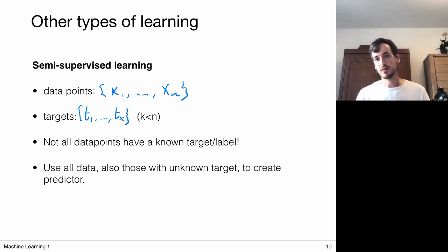And the goal is to really exploit all available data. Now, let's consider, for example, the example of a classification algorithm that looks for images. In images, it looks for cats and dogs.